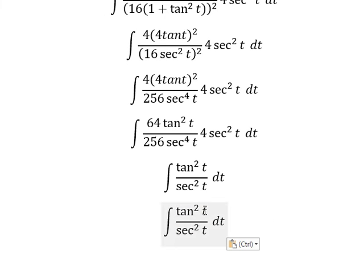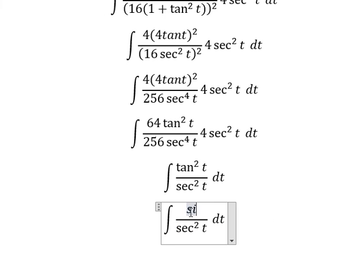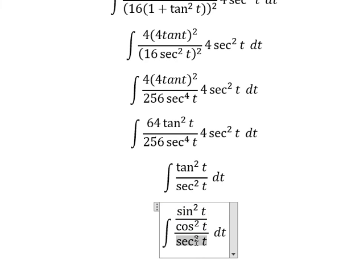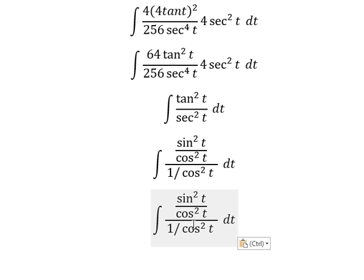tan squared t, that is sine squared t over cosine squared t. We reverse: we change by sine squared t over cosine squared t. Now we need to simplify cosine squared t on numerator and denominator.